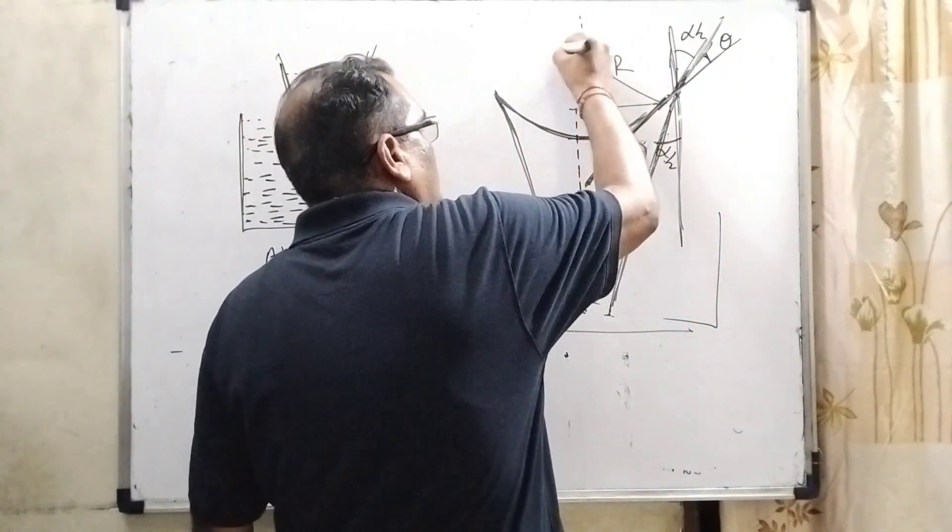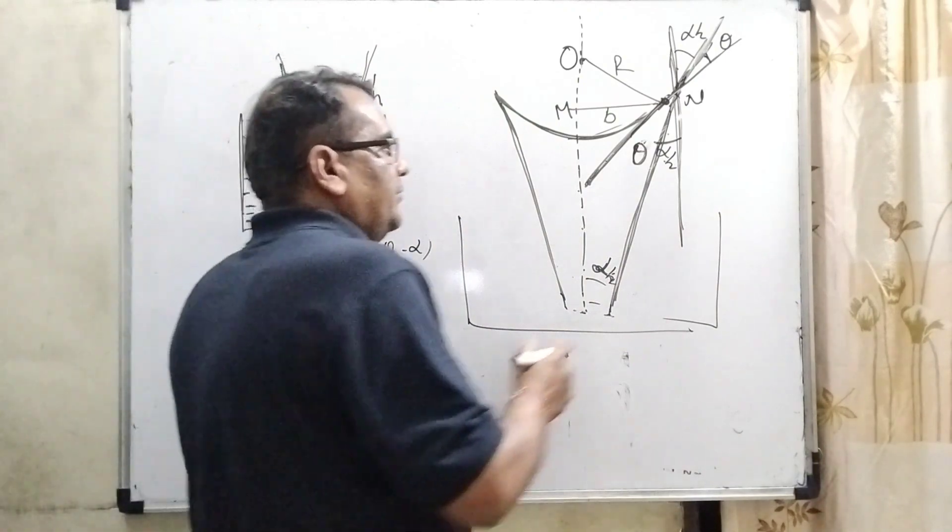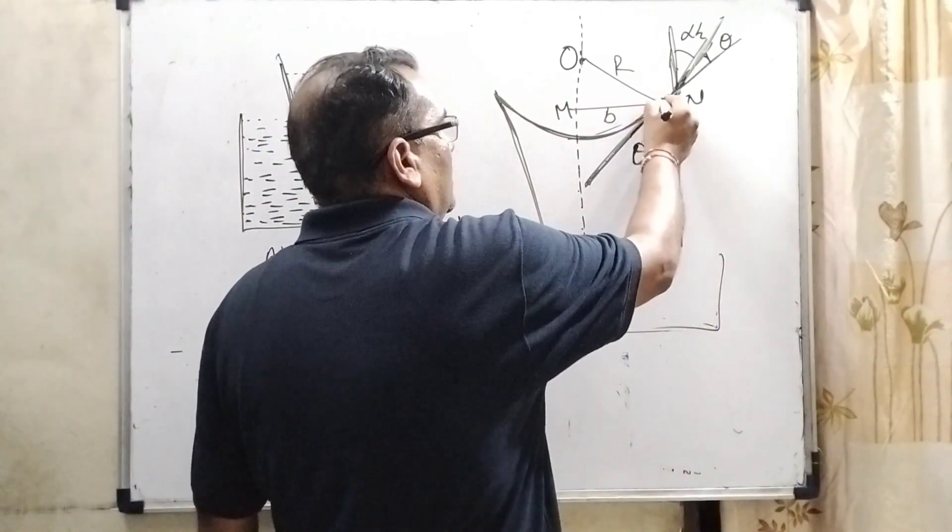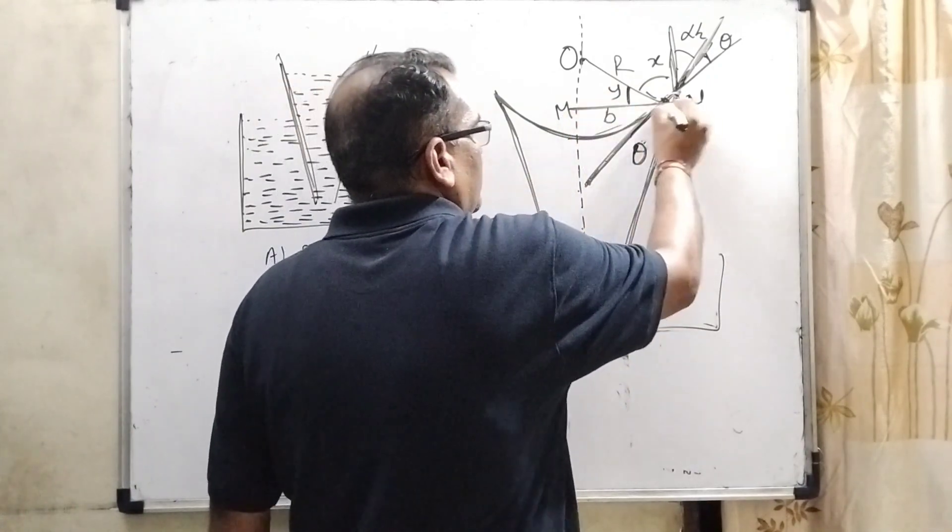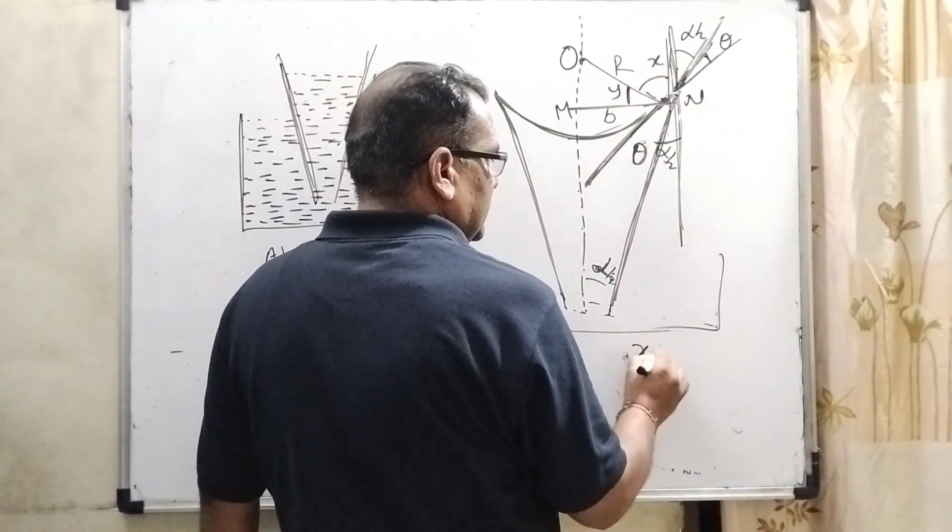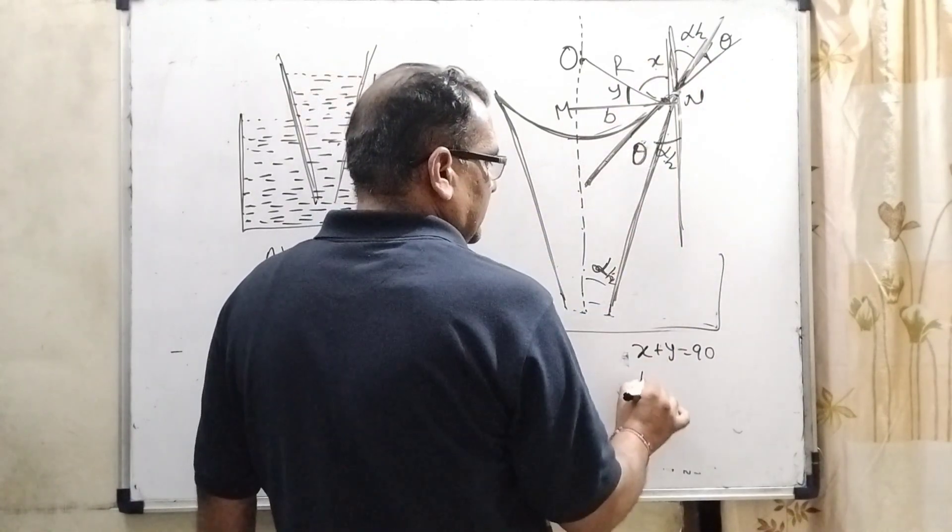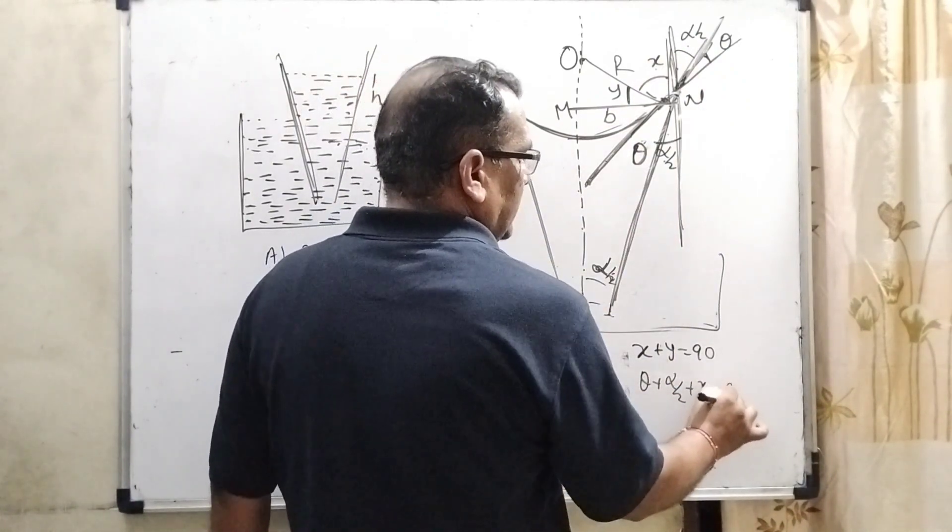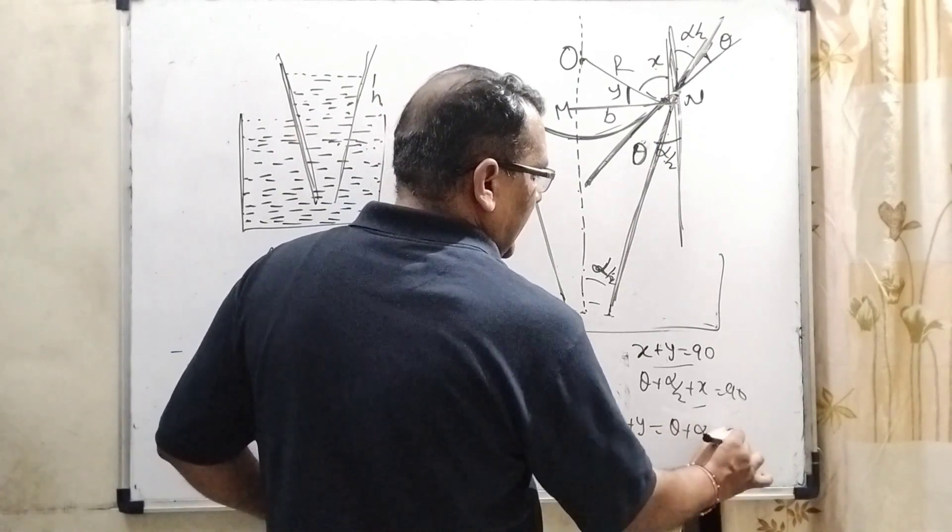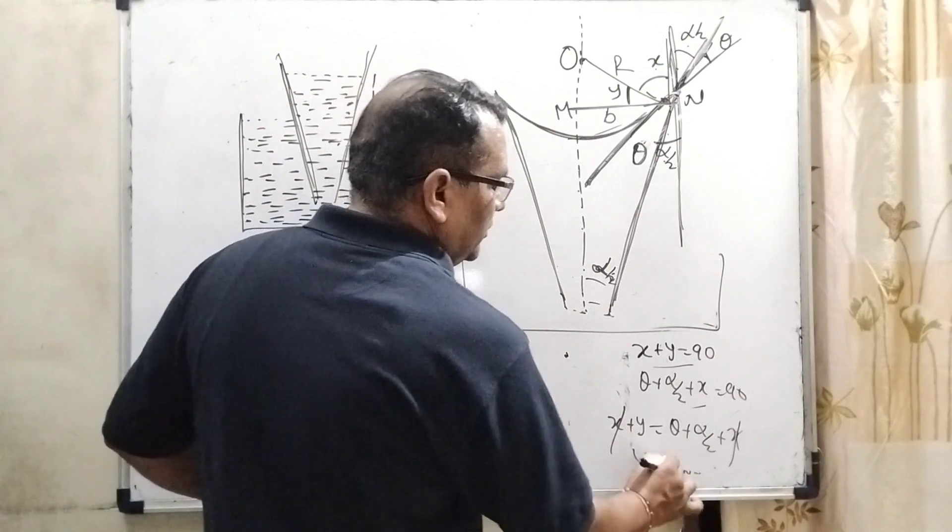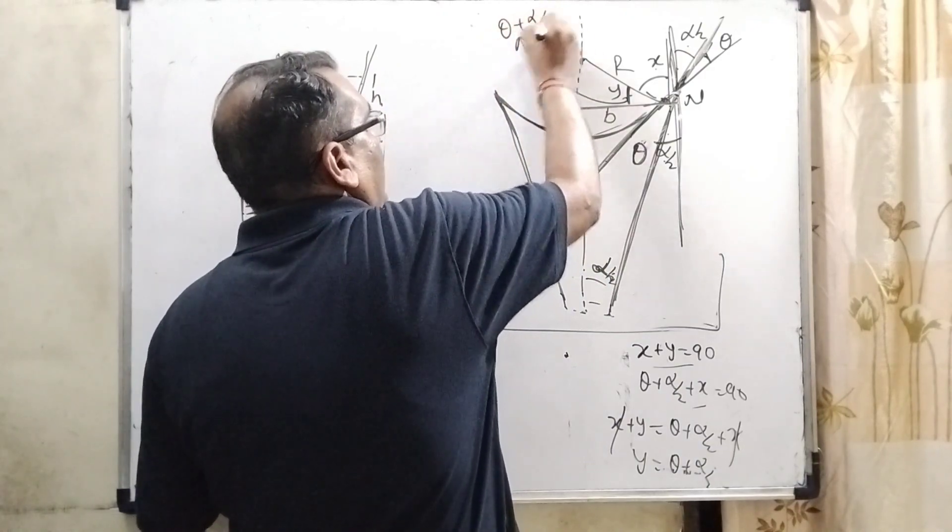Clear? Here, let us consider this point O. This point is M. This point is considered N. Okay. Convenient for the calculation. And now, let us consider for some time this angle be X and this angle be Y. Okay. Now, you can see that this angle is 90 degree means X plus Y equal to 90 degree. And here, theta plus alpha by 2 plus X is also 90 degree. By comparing X plus Y equal to theta plus alpha by 2 plus X, X, X cancel out. Then Y equal to theta plus alpha by 2. What is Y? Angle Y equal to theta plus alpha by 2. Clear?